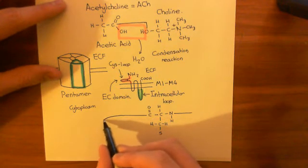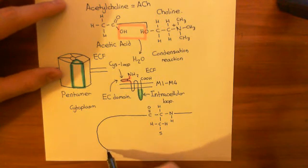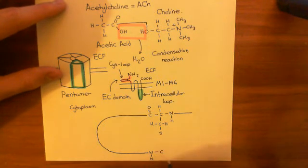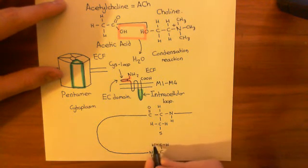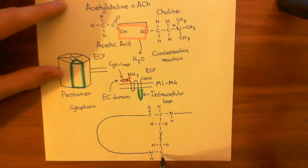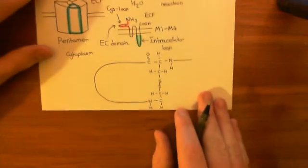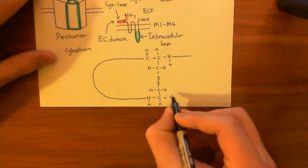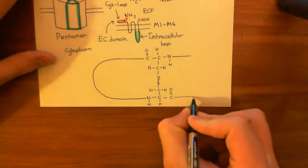The polypeptide continues — I'll just draw a line to represent many amino acids — and then it curves back around. Then you'll have another cysteine amino acid here: the amino group, the alpha carbon, with another cysteine R group. Those two will be linked together. Here is the carboxylic acid group, and then it will continue on.